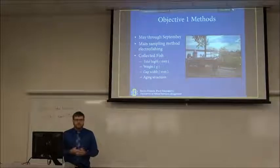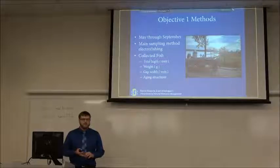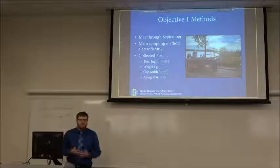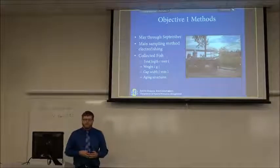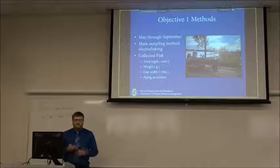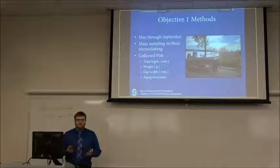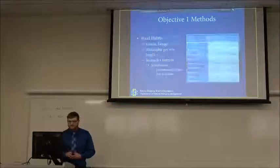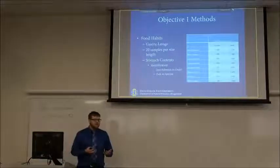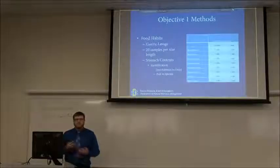For our target species, if we don't get enough through electrofishing, we'll be doing short-term sets of gill nets and trap nets throughout the day and night to acquire the fish we need. Once we collect the fish, we're going to get the total length, weight, gape width — from one side of the mouth to the other — and aging structures. For all fish we're doing scales, excluding bullheads, for which we'll take the right pectoral fin and take sections out of it to age them.